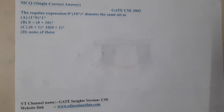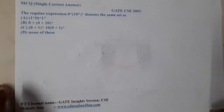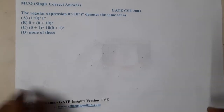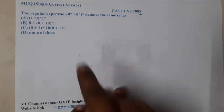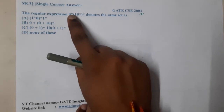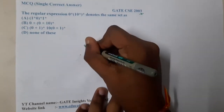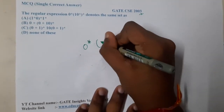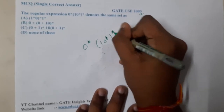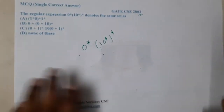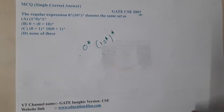Hello guys, we are back with our next lecture. In this lecture, let us go through the next question. This question belongs to GATE CSC 2003. The given question is: the regular expression (0*10*)* — what set does it denote?